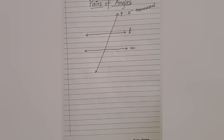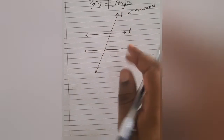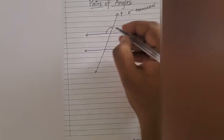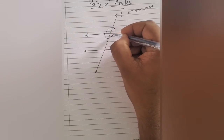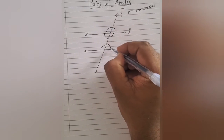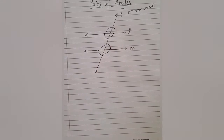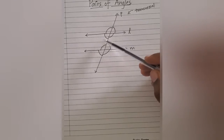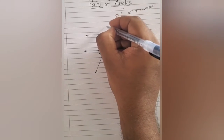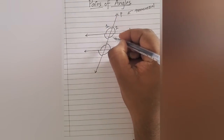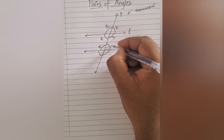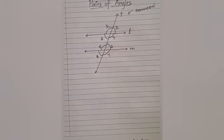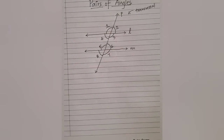You shall observe that this transversal passing through the parallel lines leads to the formation of eight angles — one, two, three, four, five, six, seven, and eight. When the transversal passes through the two parallel lines, it leads to the formation of eight angles. Let me number them for your understanding: this is one, two, three, four, five, six, seven, eight. So there are eight angles total. Now let's find the pairs of angles among them.